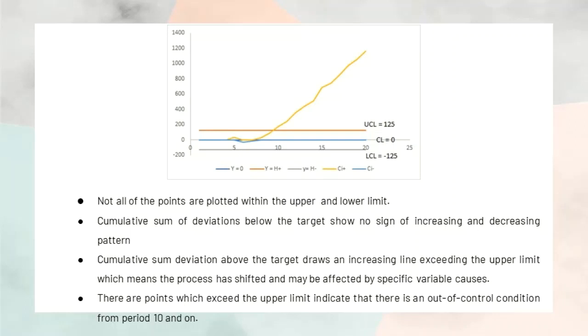However, the result of cumulative sum deviation above the target draws an increasing line exceeding the upper limit which means the process has shifted and may be affected by specific variable causes.